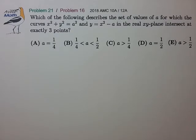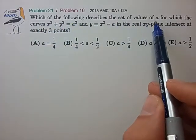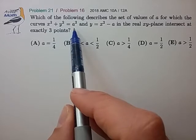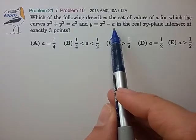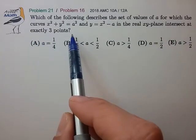Hi, this is problem 21 from the 2018 AMC 10a. Which of the following describes the set of values of a for which the curves x squared plus y squared equals a squared and the parabola y equals x squared minus a in the real xy plane intersect at exactly three points?